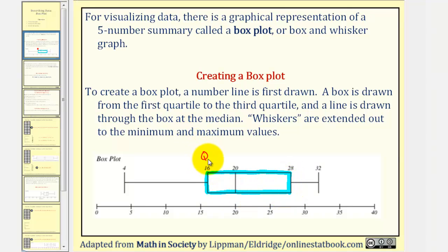Quartile one is equal to 16, and quartile three is equal to 28. A line is drawn through the box at the median, which would be this line here. Notice our median is 20.